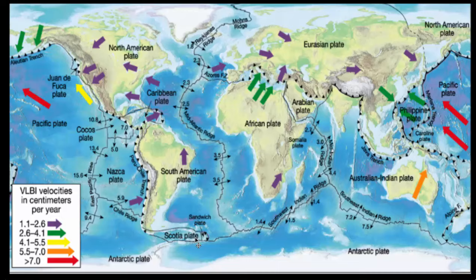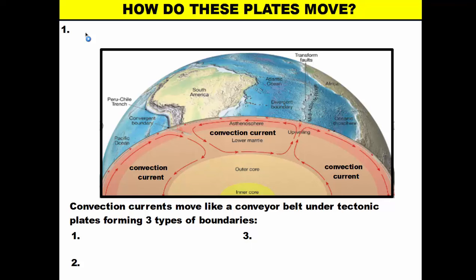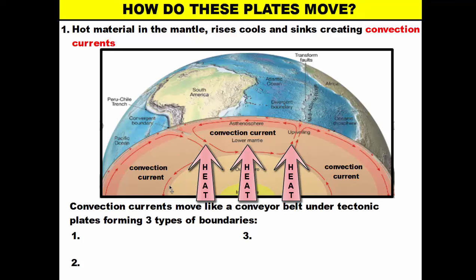The reason why the seafloor is able to spread is because these plates actually float on the mantle. Because they float on the mantle, they move around on the mantle — specifically the layer called the asthenosphere. To understand how they move, you need to know about the process of convection.